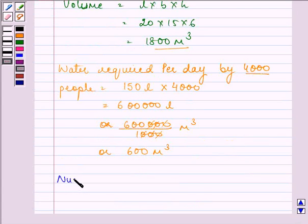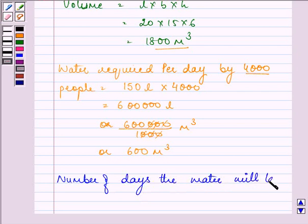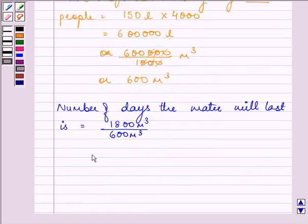Now, the number of days the water will last is: every day 600 meter cube of water is required, and in the tank we have 1800 meter cube. So on simplifying, we get the answer as 3 days.